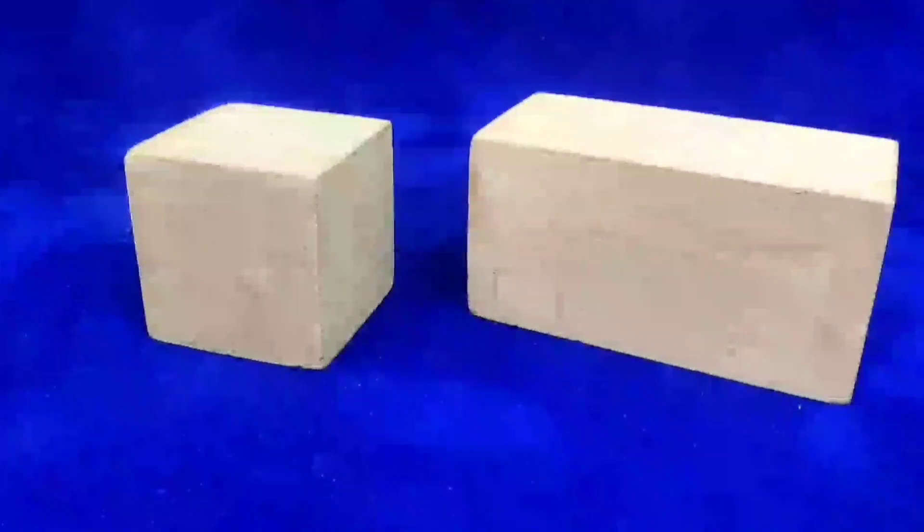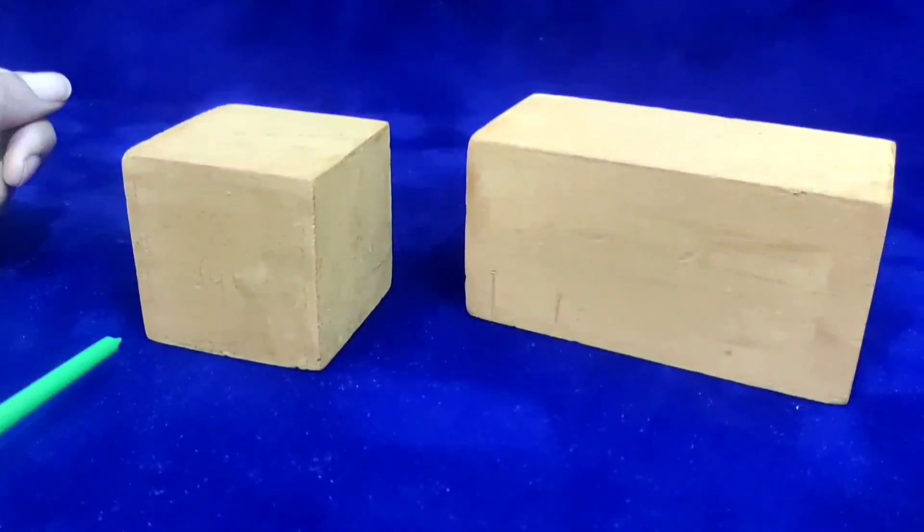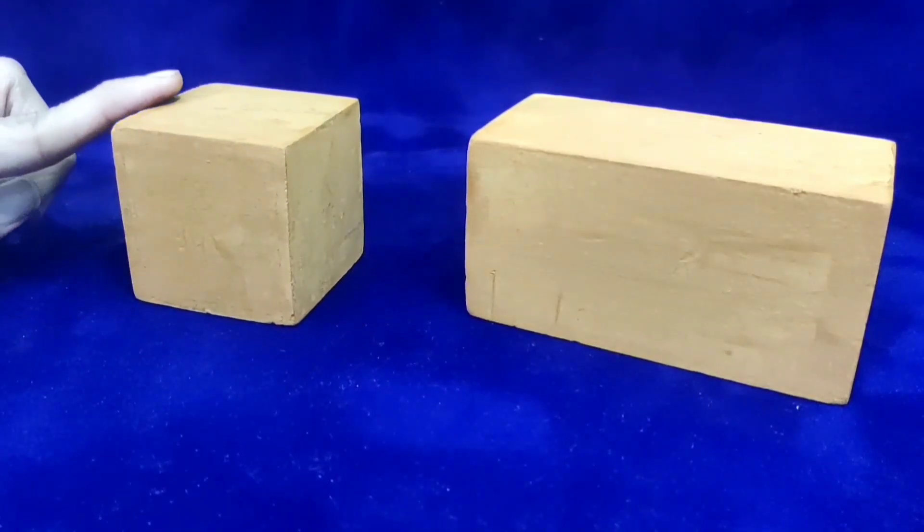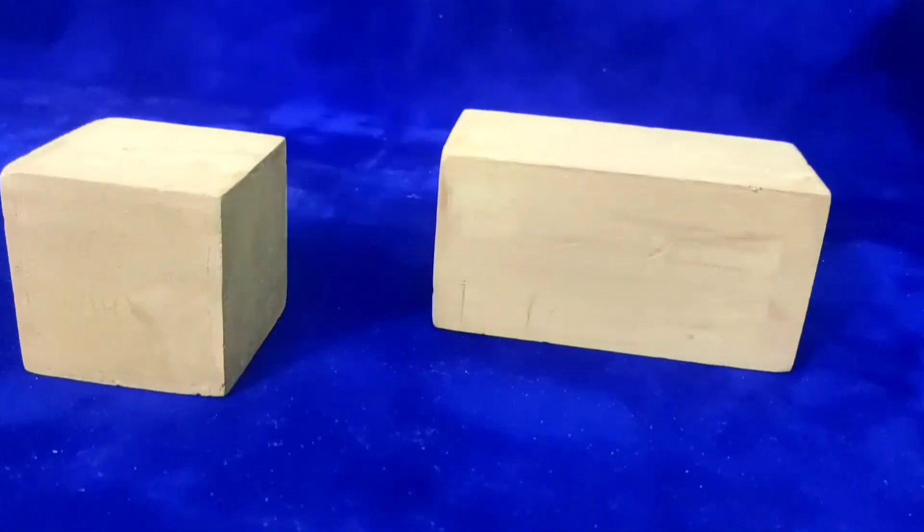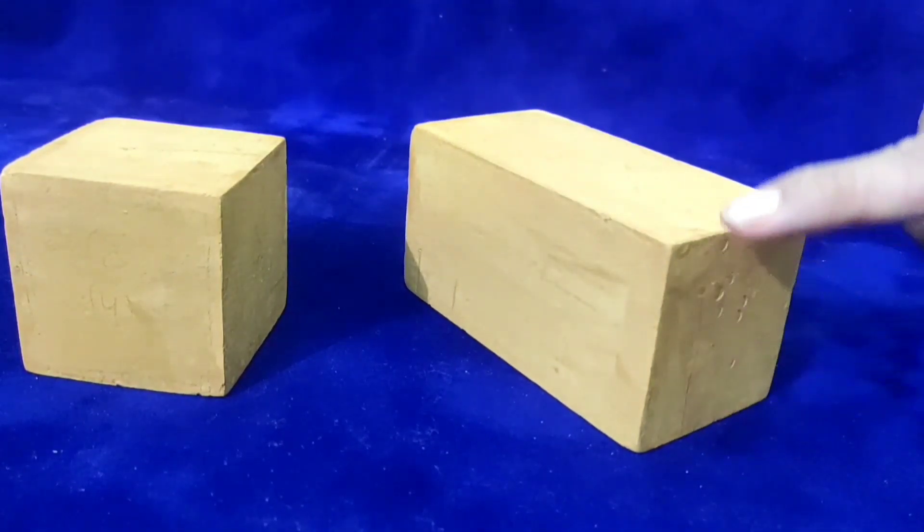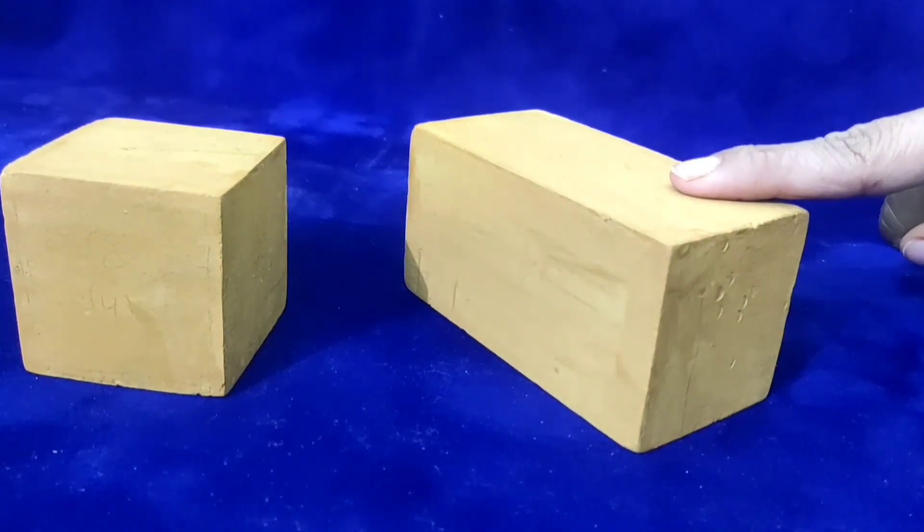So students, an object having equal length, breadth and height is called a cube. And an object having different length, breadth and height is known as a cuboid.